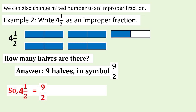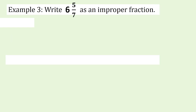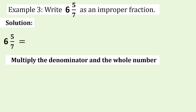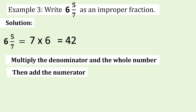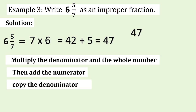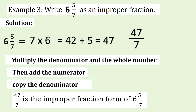So 4½ equals nine-halves. Example 3: Write 6 and five-sevenths as an improper fraction. Solution: Multiply the denominator and the whole number — 7 times 6 equals 42. Then add the numerator — 42 plus 5 equals 47. Copy the denominator: 7. So 47 sevenths is the improper fraction form of 6 and five-sevenths.